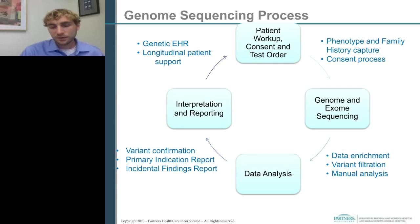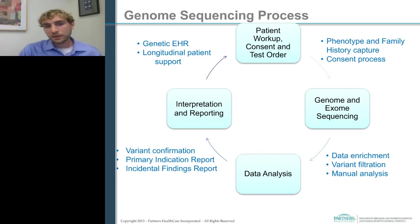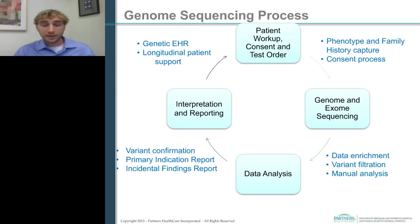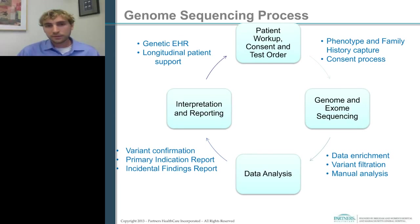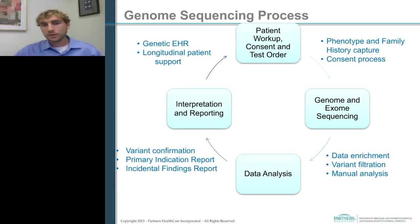You still then have manual analysis to determine the interpretation of these variants and any confirmation of variants you're going to put on the report. For genome and exome sequencing, you oftentimes actually have more than one report — not just the initial report targeted for the primary indication, but potentially an additional incidental findings report. And because of the vast amount of variants from genomic sequencing, it's actually more important to make sure that data gets into the EHR to enable clinical decision support and longitudinal support for the patient.